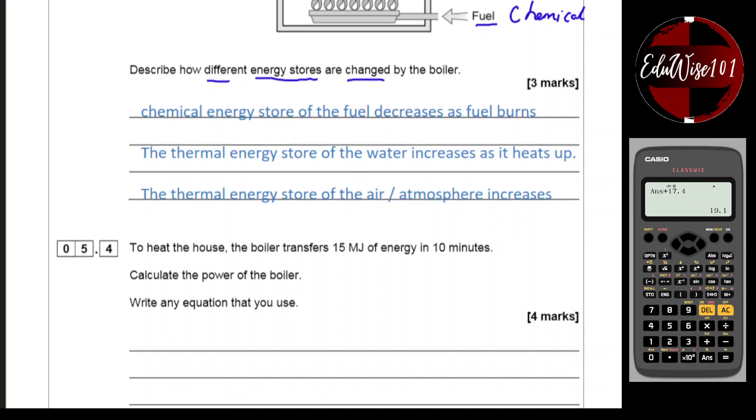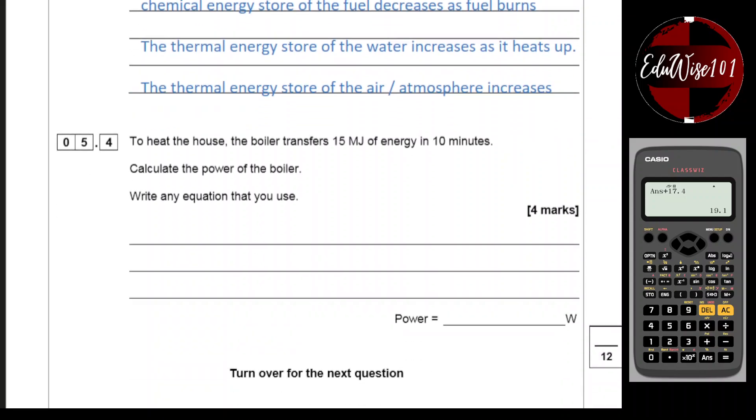Question 5.4. To heat the house, the boiler transfers 15 megajoules of energy in 10 minutes. Calculate the power of the boiler. Now, 15 megajoules is 15 times 10 to the power of 6 joules. Now, 10 minutes, you need to convert that to seconds. So 10 times 60, that would give me 600 seconds.